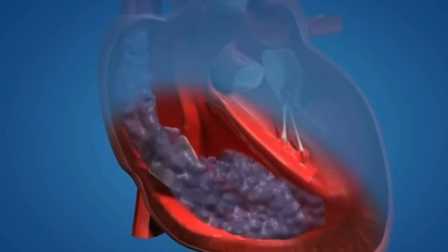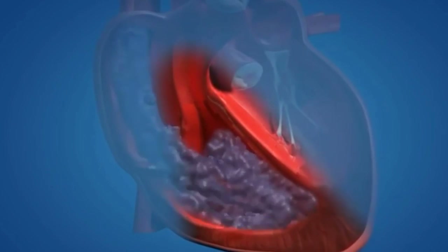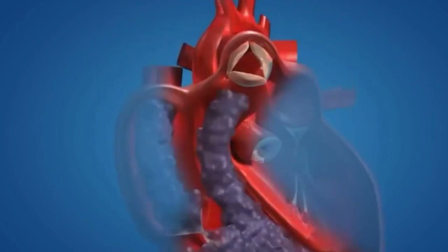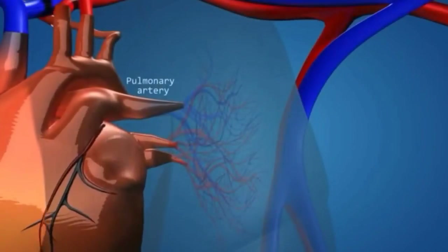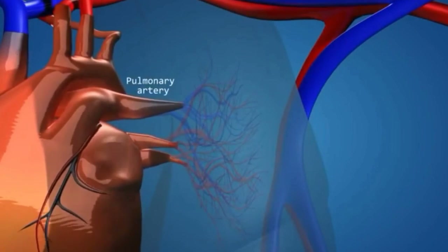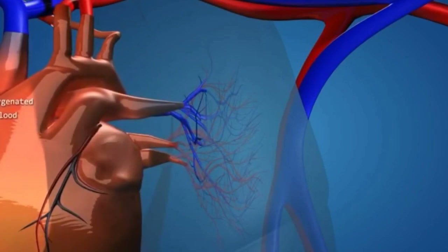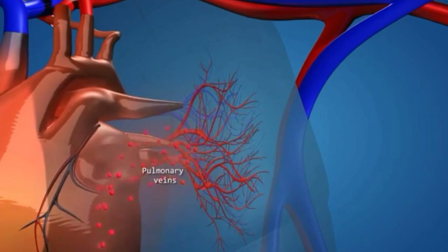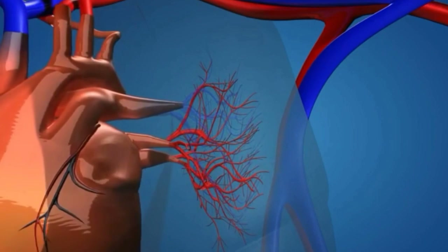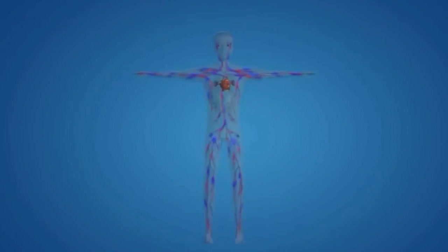Both the superior and inferior vena cava open into the right atrium. From the right atrium, blood flows into the right ventricle by the opening of the tricuspid valve. From the right ventricle, blood enters the pulmonary artery by the opening of the pulmonary valve. From the pulmonary artery, blood goes to the lungs, where the oxygen we inhale is exchanged with the CO2 from the blood.